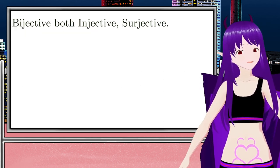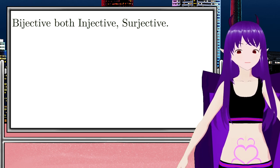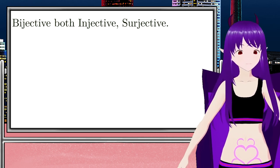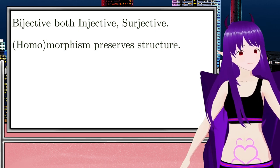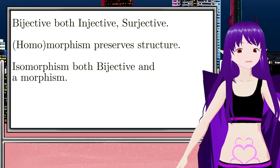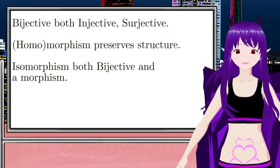If it is both injective and surjective, then it is a bijective function. If structure is maintained, then it is a morphism. If it is a morphism and a bijection, then it is an isomorphism.